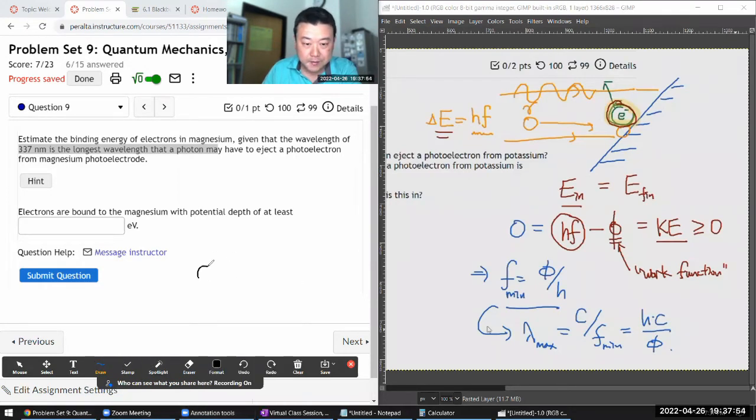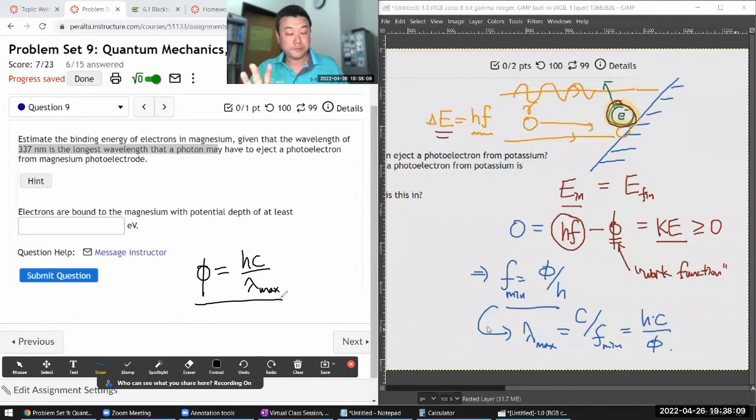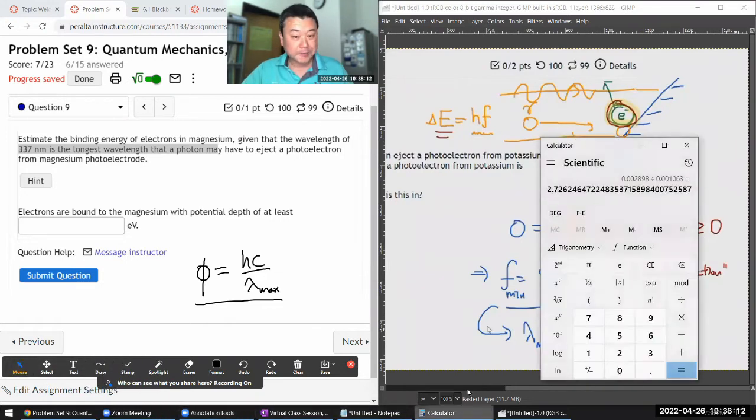When you do that, the work function is equal to hc divided by the maximum, longest wavelength that will eject an electron, a photoelectron. With that, let me just plug in the numbers.